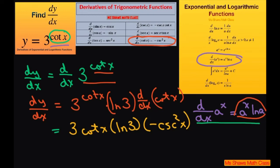Simplifying further, let's pull this negative out. So this will give you negative 3 to the cotangent of x times ln of 3 times cosecant squared of x. And this will be your final answer.